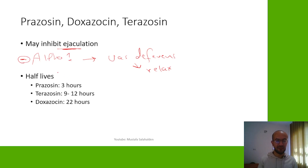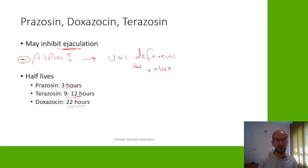Regarding half-lives: prazosin has a half-life of about 3 hours, terazosin is 9 to 12 hours, and doxazosin has the longest half-life at approximately 22 hours.